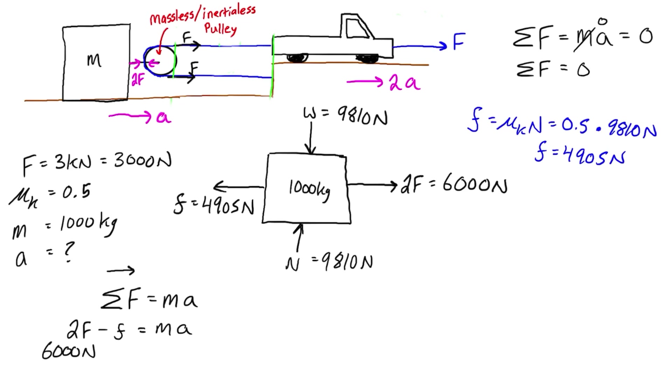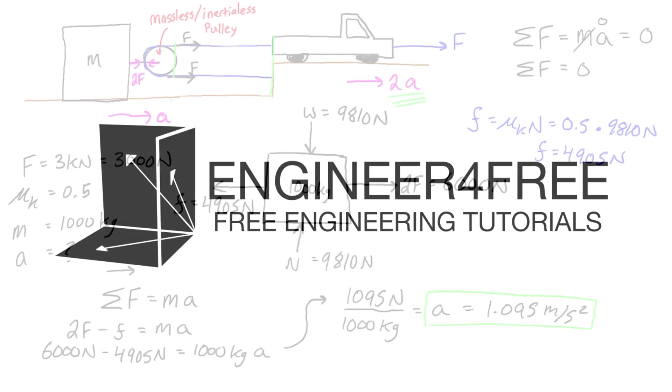We have the values here so it is just 6000 newtons minus 4905 newtons equals the mass which is a thousand kilograms times acceleration. We have 1095 newtons over 1000 kilograms equals the acceleration and that is 1.095 meters per second squared. That is the answer for the acceleration of the mass block. Because we know that the acceleration of the truck as discussed earlier is 2a, if you were asked for the acceleration of the truck it would just be 2 times that, that would be 2.190 meters per second squared.